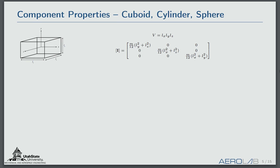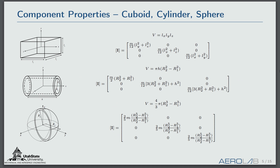We have some component properties listed in the paper — we didn't derive them since they're available elsewhere, but we wanted them all in one place. We have a cube, a hollow cylinder, and a hollow sphere, with equations for volume and inertia. You'll notice we don't have equations for the center of gravity for these objects because the CG is zero for each — meaning the origin is located at the center of gravity.